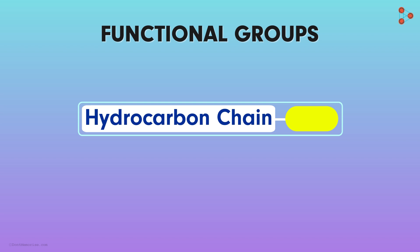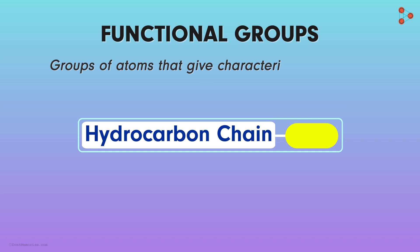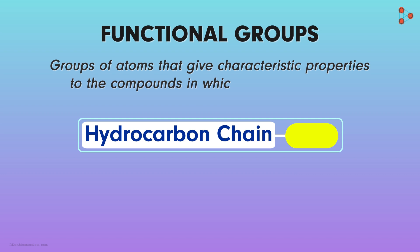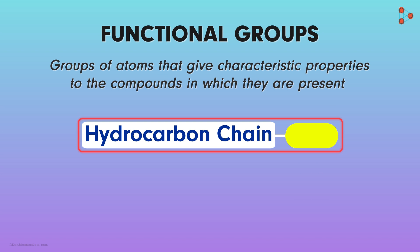Beginning with the definition first. In simple words, these are the groups of atoms that give characteristic properties to the compounds in which they are present. Their presence is quite influential. If they are a part of a compound, the entire compound takes its properties.